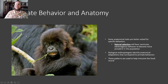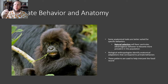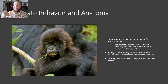Some anatomical traits are better suited for specific environments — this is an example of natural selection, which we talked about in the first week of class. Biological anthropologists identify anatomical adaptations that correspond to primate behaviors.